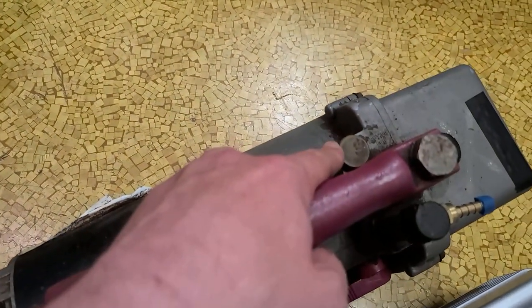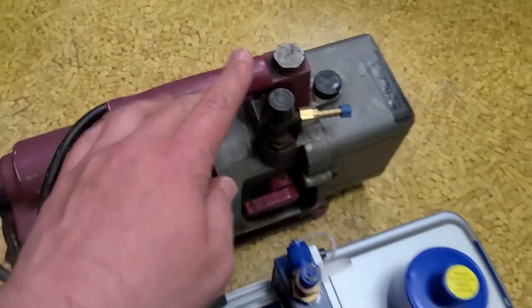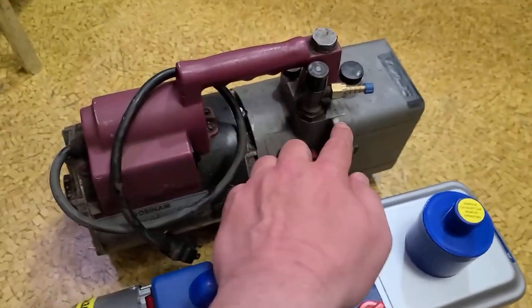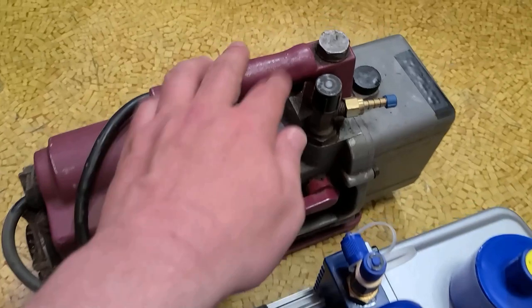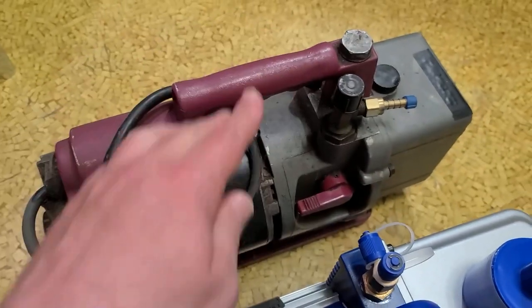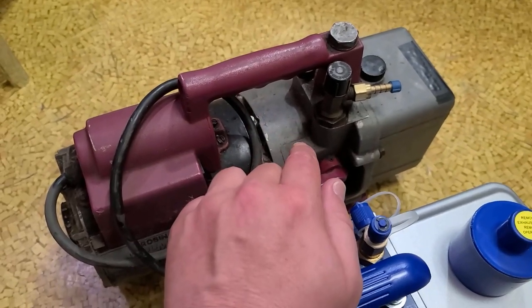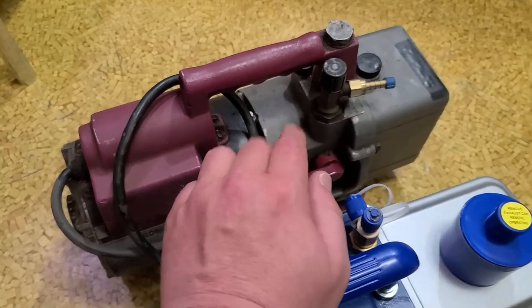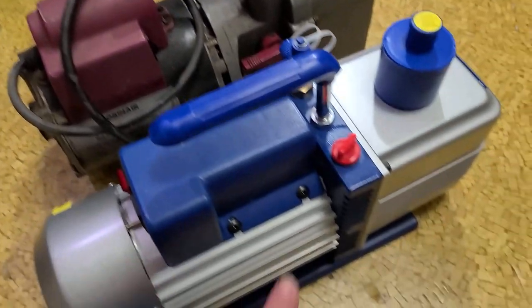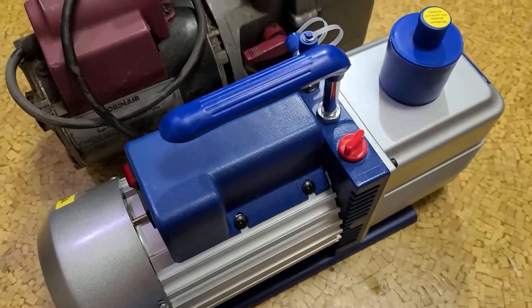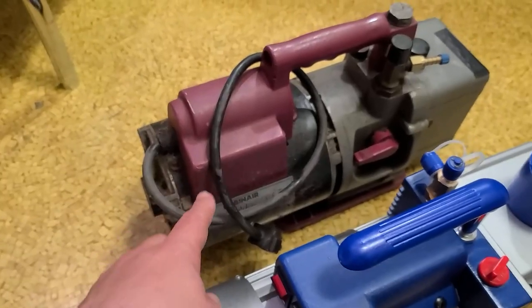Robin Air also has what's known as a gas ballast. You can get some issues with condensation inside the pump, so the Robin Air has a gas ballast which is like an air bypass that allows moist air to circulate through the pump to reduce chances of condensation. This Beaver has no such feature either.